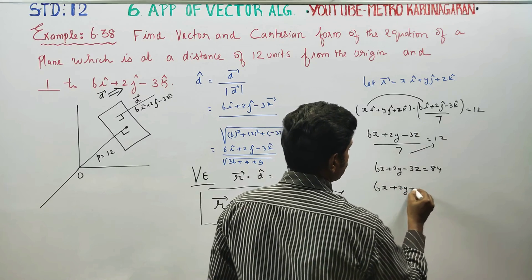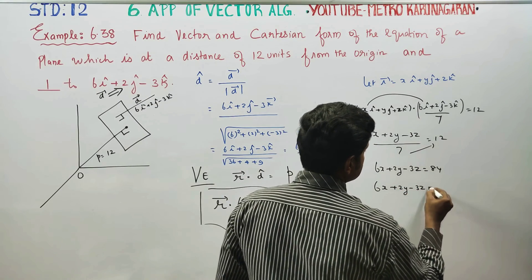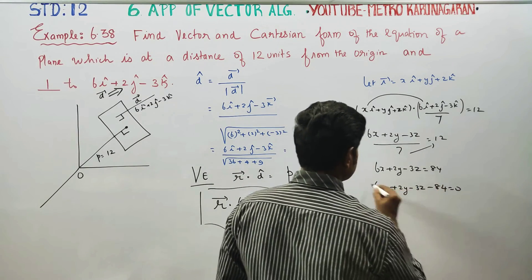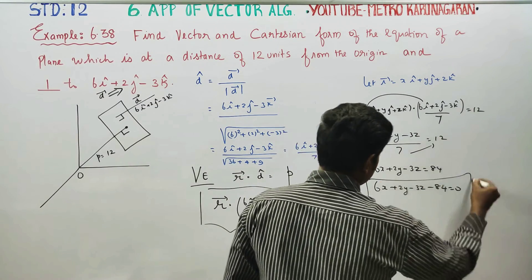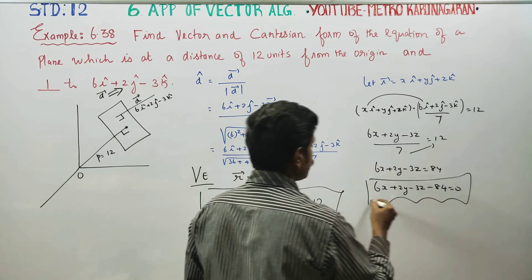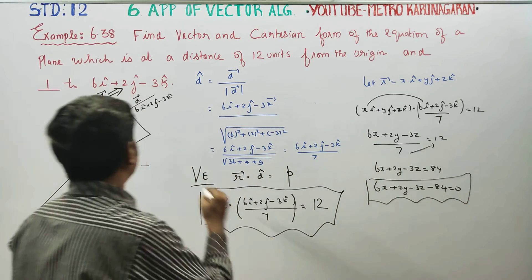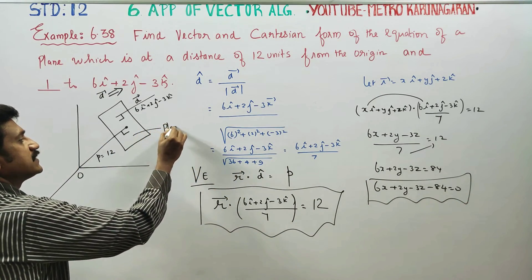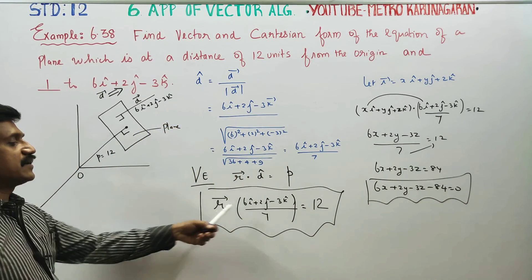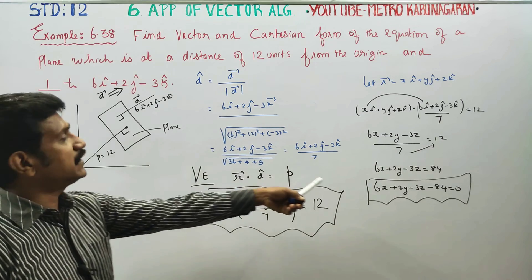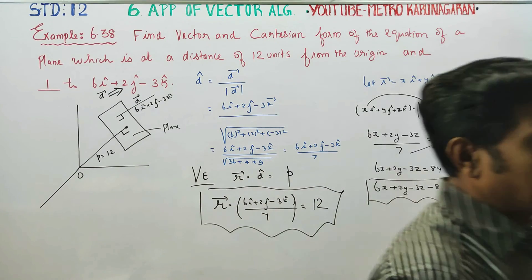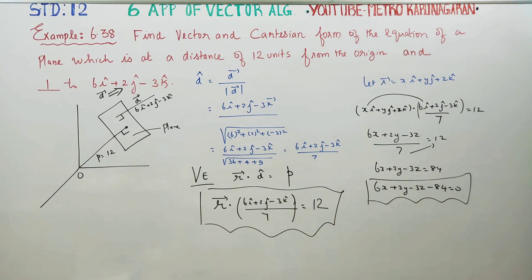Therefore, 6x + 2y - 3z - 84 = 0. This is the Cartesian equation of the plane. The vector equation and the Cartesian equation are both found. Thank you.